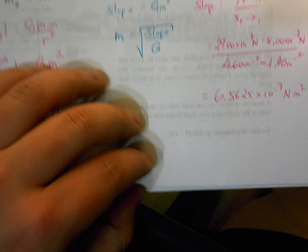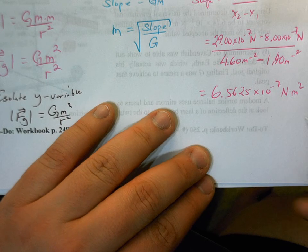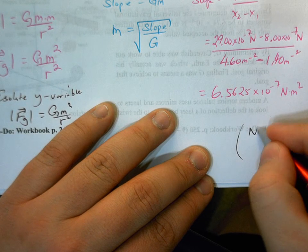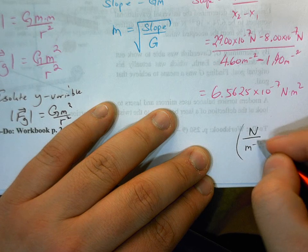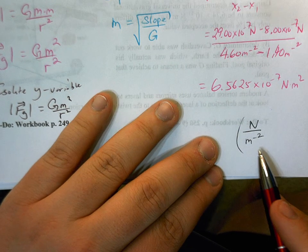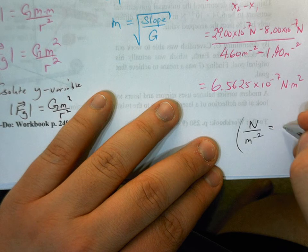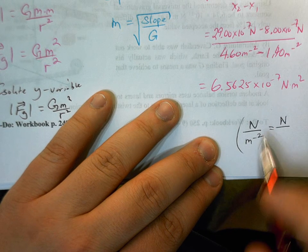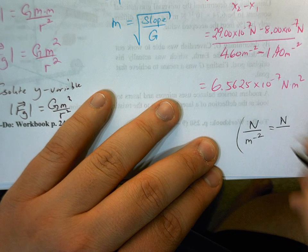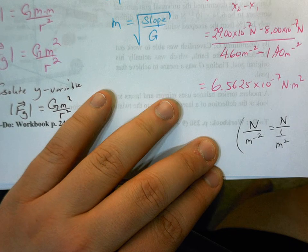So just to comment on the units here, I'll just kind of put that down here. What I have is I have newtons up top, and I'm dividing that by meters to the minus 2. Well, we know anything to the inverse power is just going to be 1 over that.